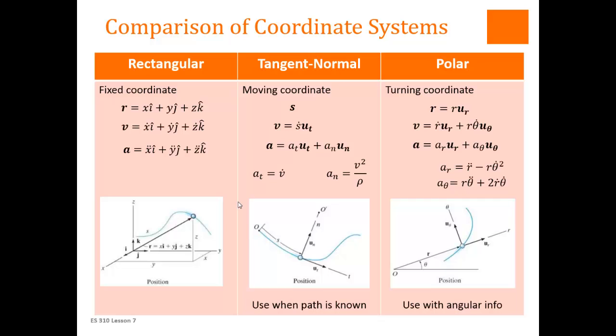The tangential normal coordinates are usually used when something is known about the path, which tends to be a curve. So you may know the radius or you may know the expression for that path.